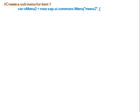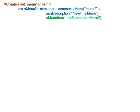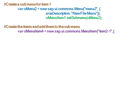Now we create a sub-menu for the first menu item, 'New'. The constructor for a new menu is used with description 'New File Menu', and this menu is added to menu item 1 as a sub-menu.